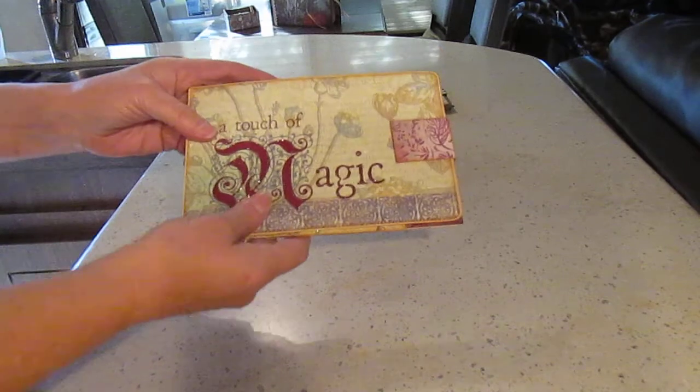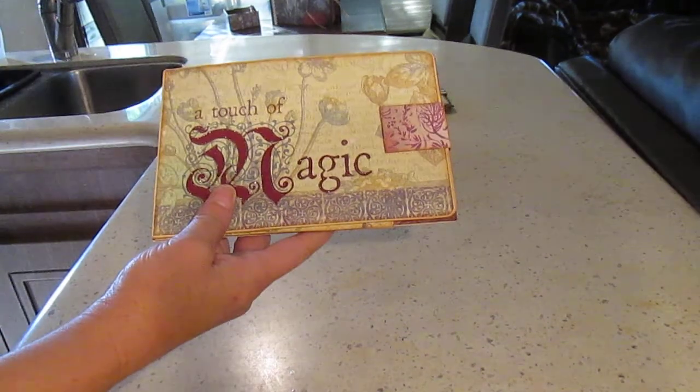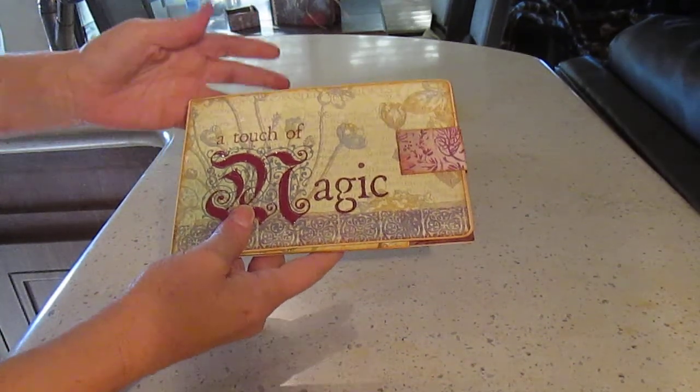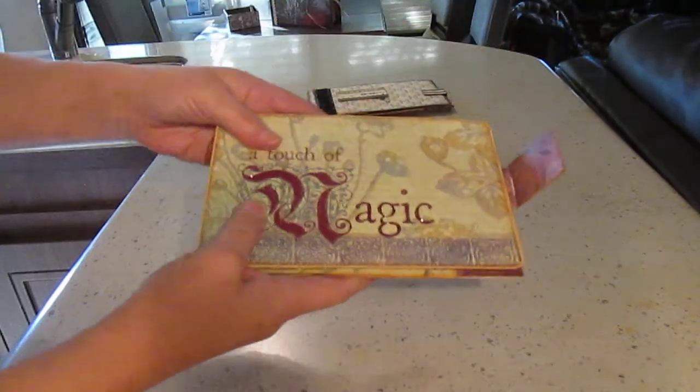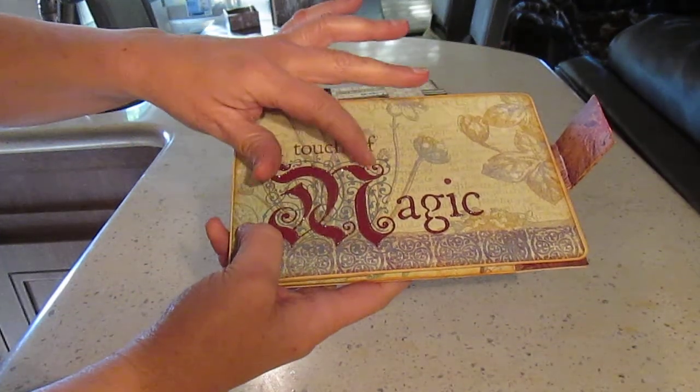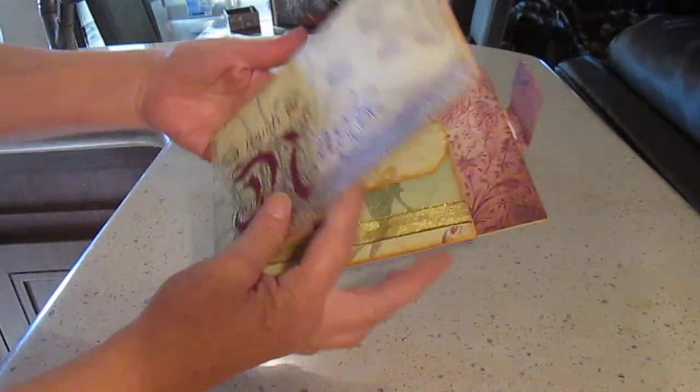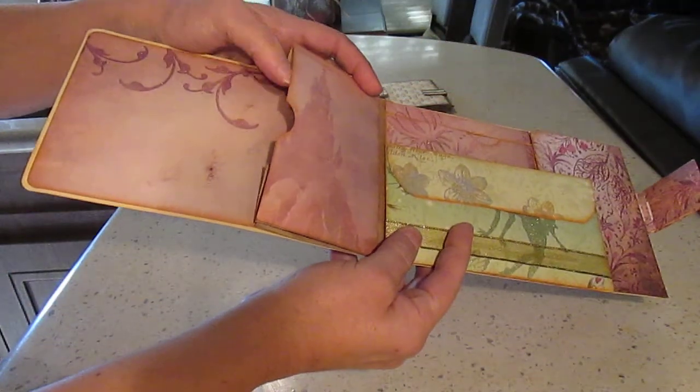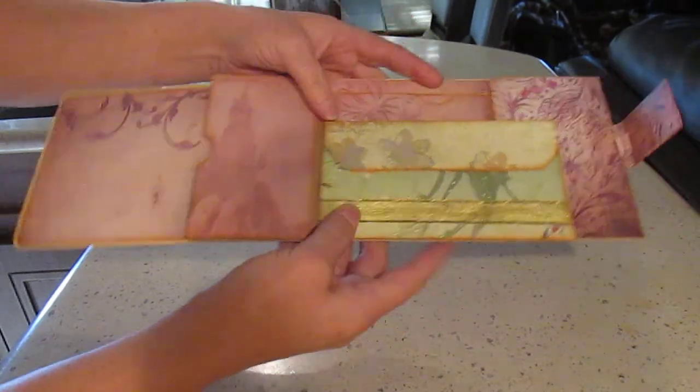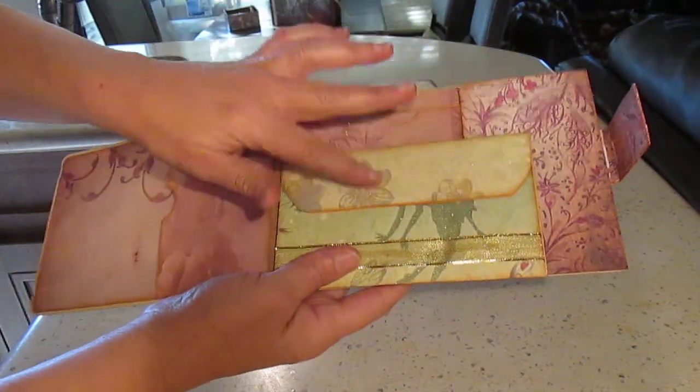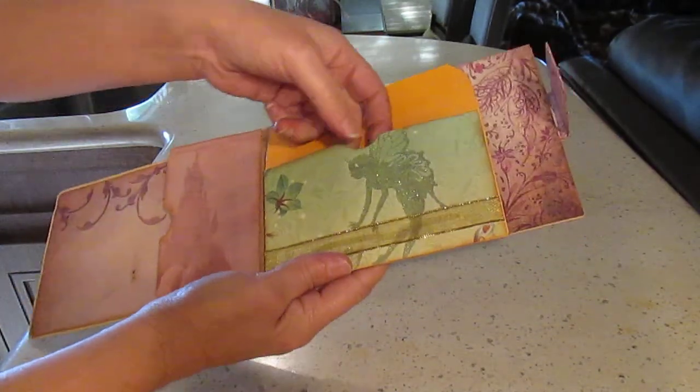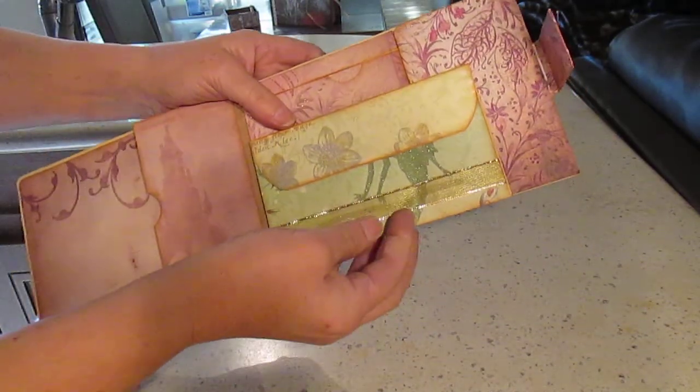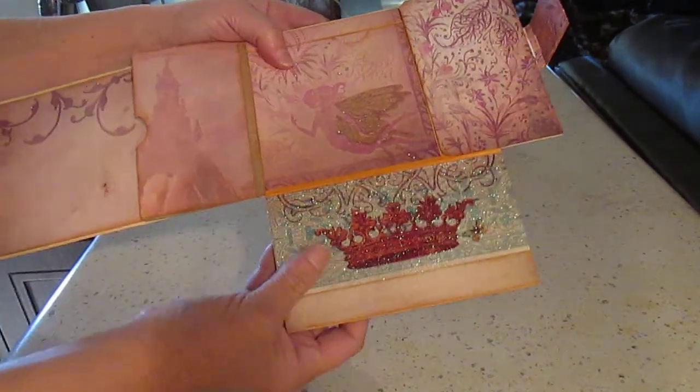Then I made this one. This is from the paper collection called Once Upon a Time, the 12 by 12 sheets. Again they're pretty sturdy. So I use this. I put some stickers here on the letters - Magic. So it opens like this. So you have the envelope here, or the pocket. Envelope here. I put a magnet here - they all have a magnet by the way. And you have the envelope here. And this is just decorative. You open this.